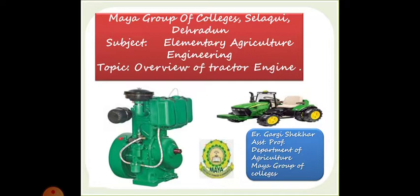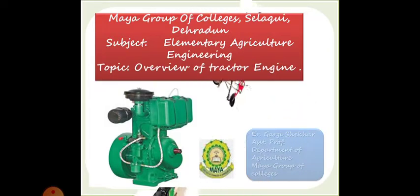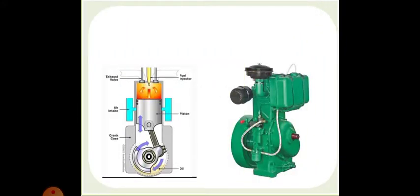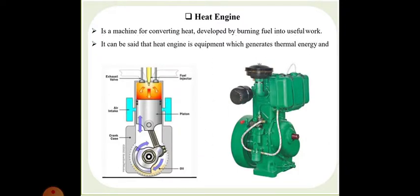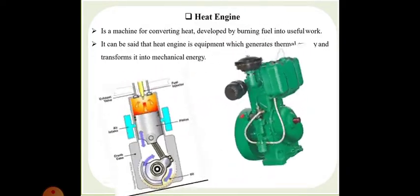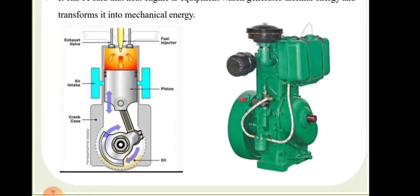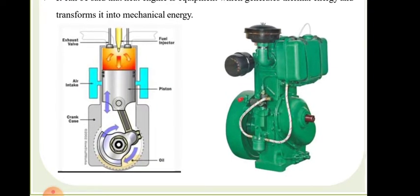You might have seen these types of engines very frequently on farms. We will be discussing all types of engines today. A heat engine is a machine for converting heat developed by the burning of fuel into useful work. The engine is equipped with equipment which generates thermal energy and transforms it into mechanical energy. You can observe in this figure a typical type of generator, which we call it in normal language, and it is a type of heat engine.